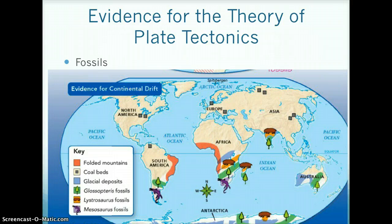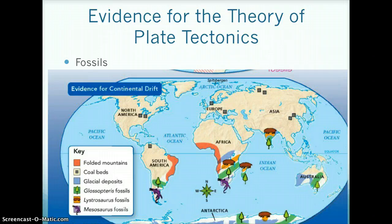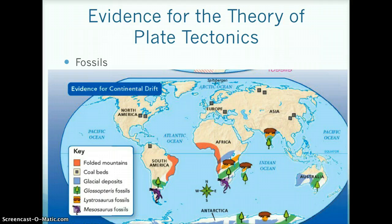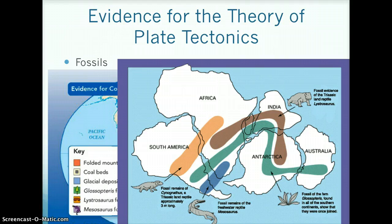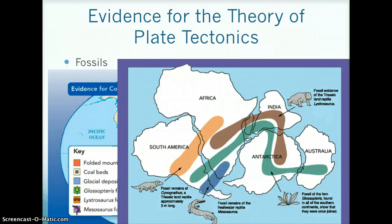A third piece of evidence that helps prove that the continents are moving is fossils. This map shows that Mesosaurus fossils have been found in both Africa and South America. The Lystosaurus fossils have been found where Africa and India line up. The Gostopterus fossils have been found where South America, Africa, India, Australia, and Antarctica lined up. This image shows how the continents lined up and where the fossils were found. The blue line represents Mesosaurus fossils, the brown line represents Lystosaurus fossils, the green line represents Gostopterus fossils, and the orange line represents Glossopteris fossils, which were found in South America and Africa.